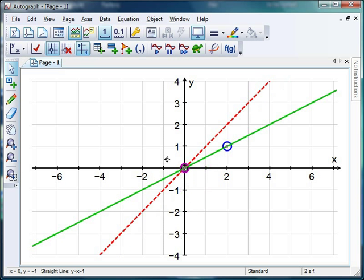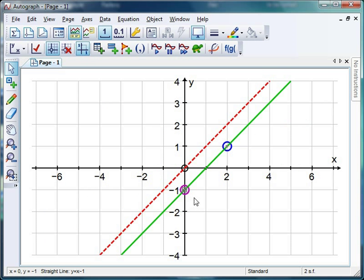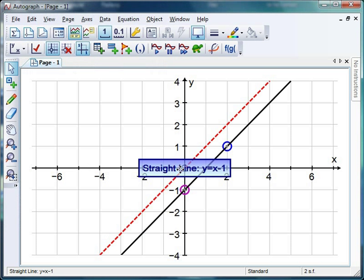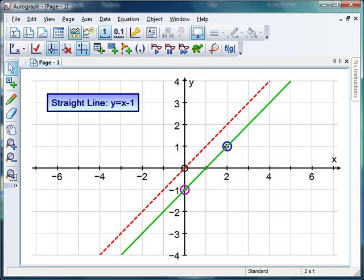Now what's nice here is I can move these points and as I move them the line changes. And I'm going to get Autograph to keep a track on that. So if I click on my line, same thing again, let's get a text box on the go. I get a nice blue text box. There it is. And at the moment Autograph's telling me that the equation of that line is y equals x minus 1.